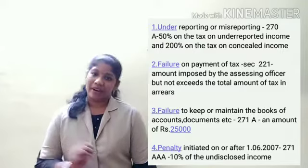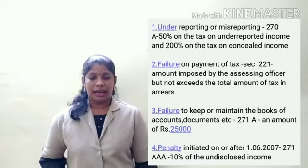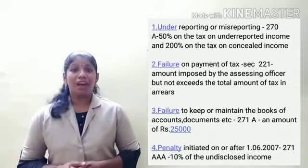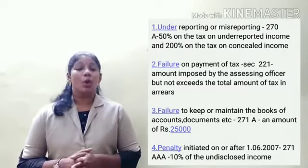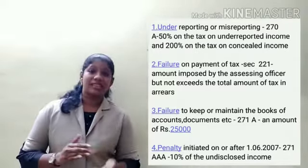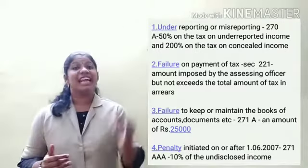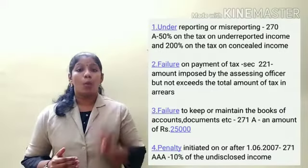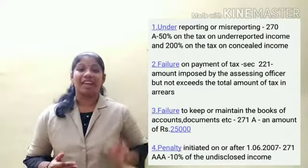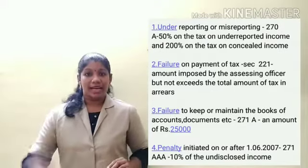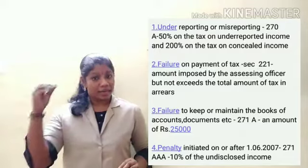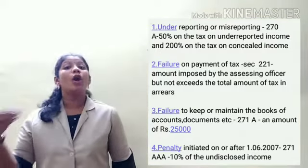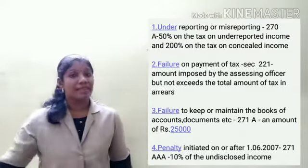The fourth situation is a penalty in the case of search initiated on or after 1st June 2007, under Section 271AAA. In such cases involving undisclosed income, a penalty of 10% of the undisclosed income may be imposed.